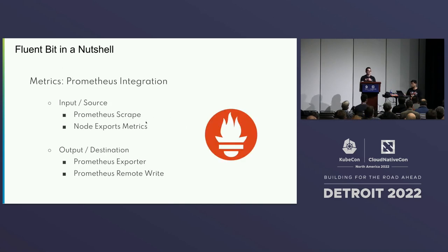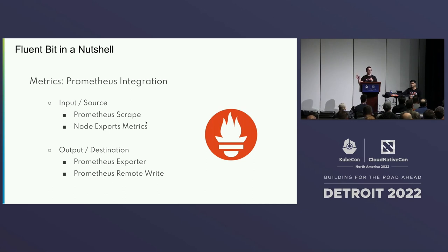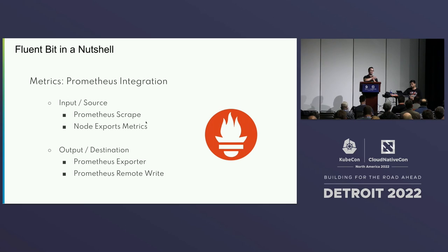On the Prometheus side, we try to replicate and integrate different specific features. For example, node exporter metrics — which is a project from Prometheus — we came up with the idea to implement the same functionality inside FluentBit. So FluentBit now has a plugin called node exporter metrics that generates the same metrics as that Prometheus tool. Many people who were running FluentBit and Prometheus node exporter metrics can now just do the same with FluentBit, so they have one less agent to manage.